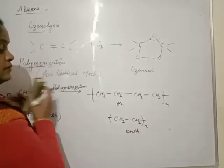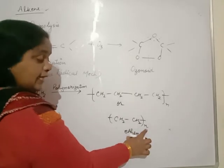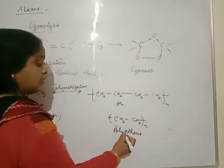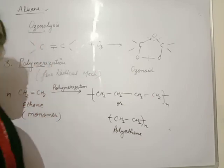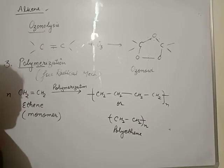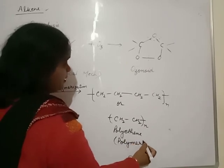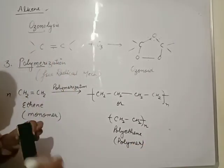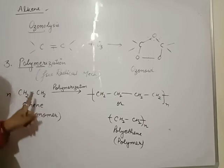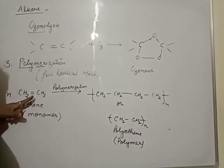But many ethene combine together. Many means poly. It is polyethene. It is same polyethene that we will use in our daily life very vigorously. It is known as polymer and this reaction is known as polymerization reaction. All unsaturated compounds, either alkene or alkyne, they will form polymer. Thank you.